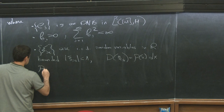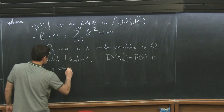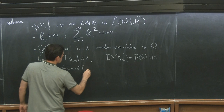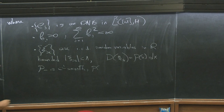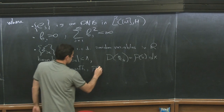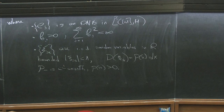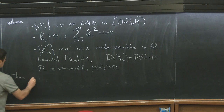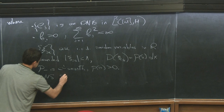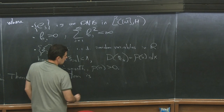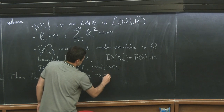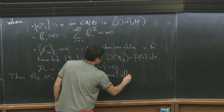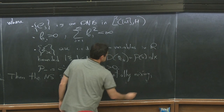Under this decomposability and non-degeneracy assumption, we have exponential mixing. The Navier-Stokes system is exponentially mixing, which means the following: there is a unique stationary measure μ, which is a probability measure over the Navier-Stokes space H.